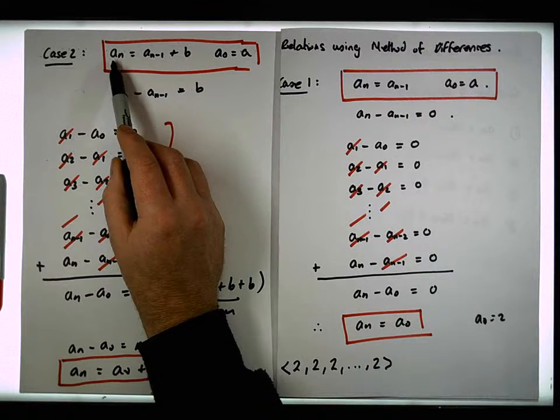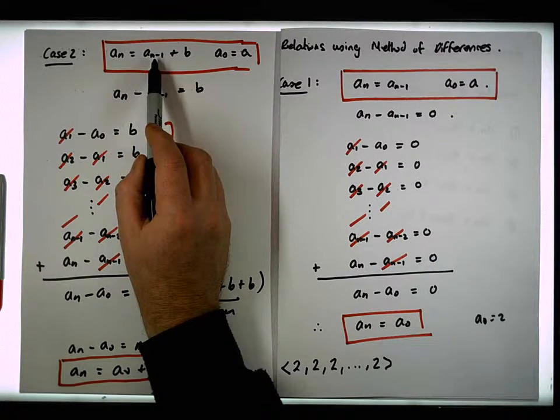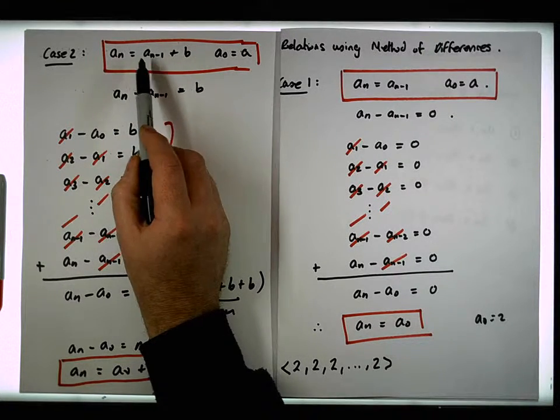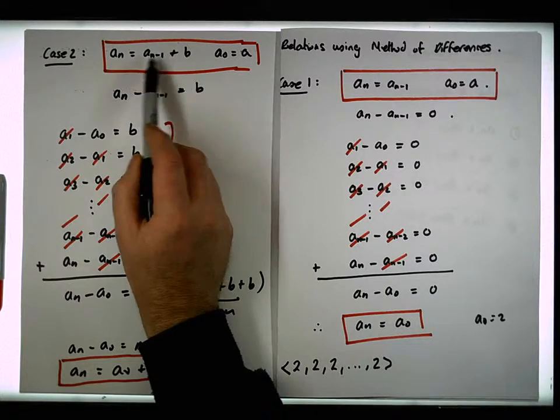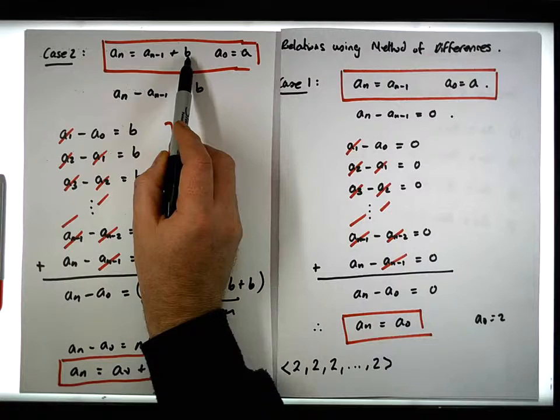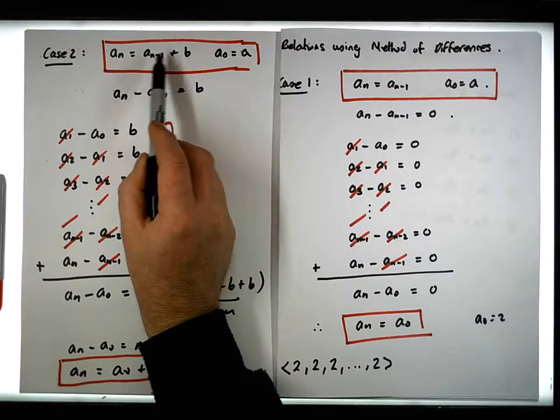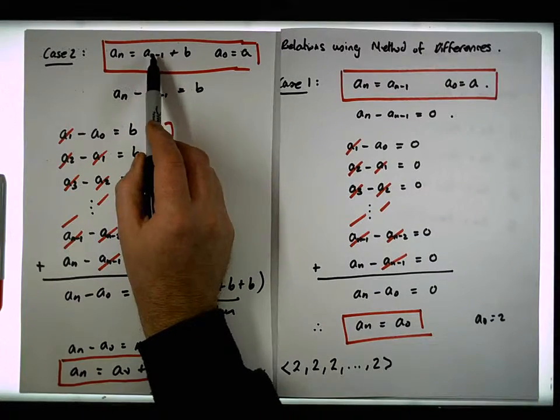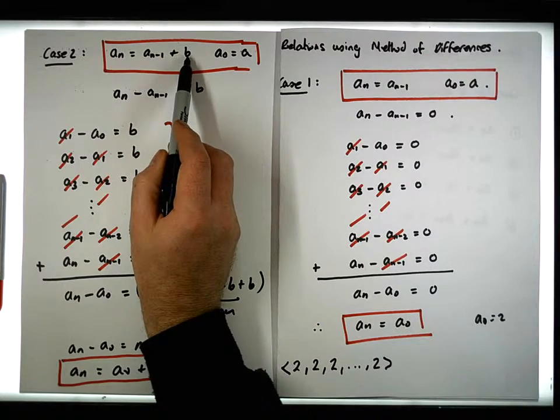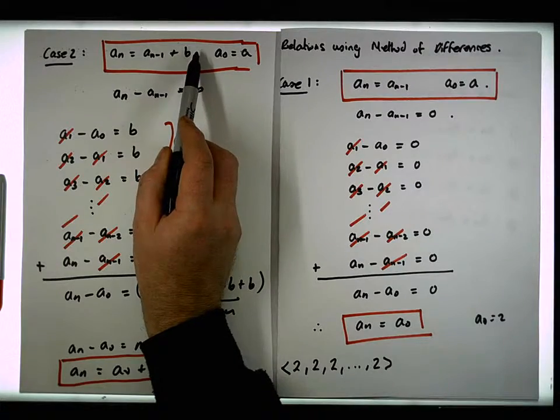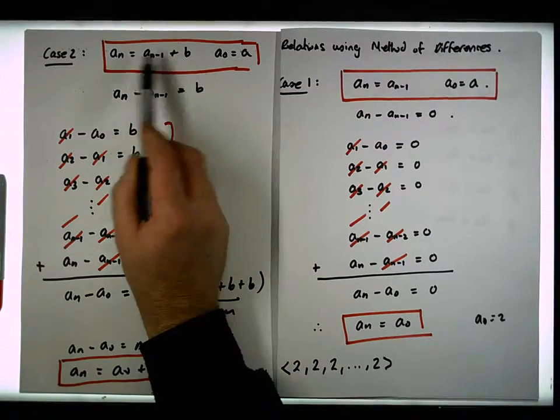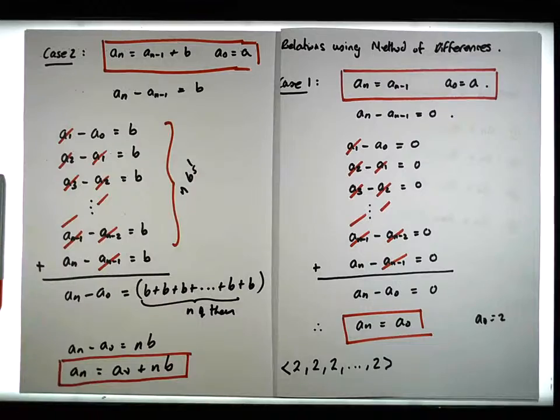So this is also linear. It's also of degree one because the nth term is defined in terms of the previous term. But it's not homogeneous because we have a B out here. For it to be homogeneous, every single term needs to be to the same power, where this is to the power of one, where this is effectively B to the power of a_{n-1} to the zero. So this is a heterogeneous system here.